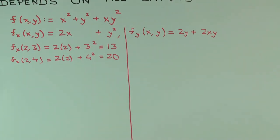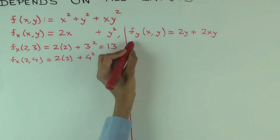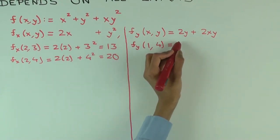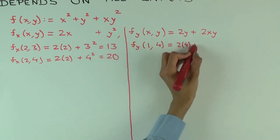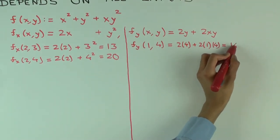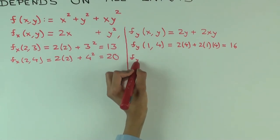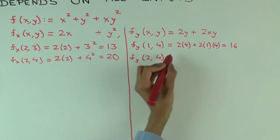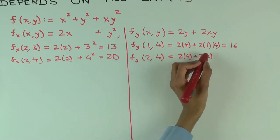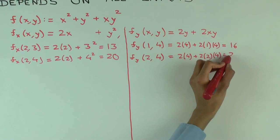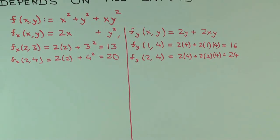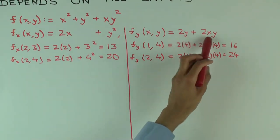What is f sub y of (1, 4)? 2 times 1 times 4, that's 16. What is f sub y of (2, 4)? 2 times 4 plus 2 times 2 times 4, which simplifies to 24. So we notice again, the y value remains the same, but when we change the x value, the output changed. So f sub y also depends on both x and y.